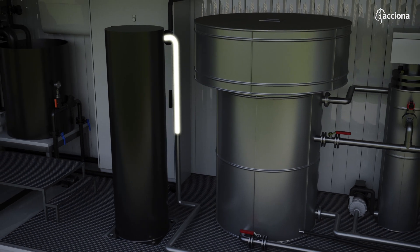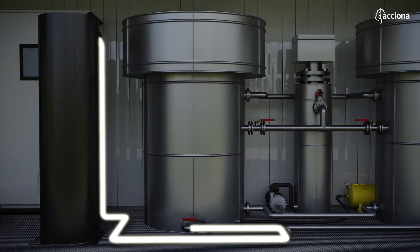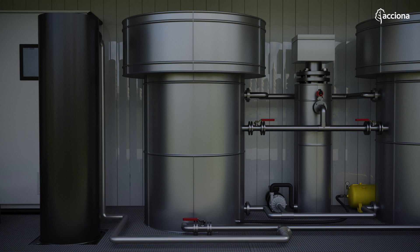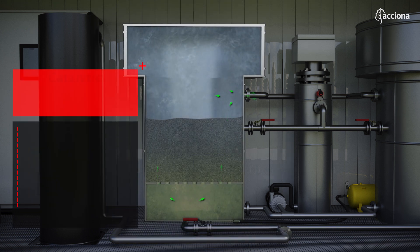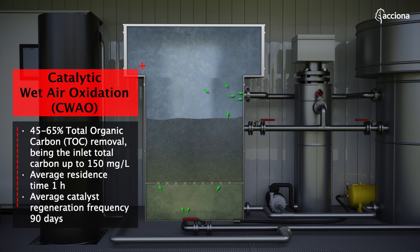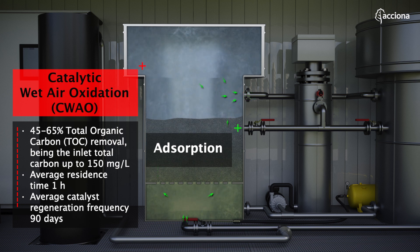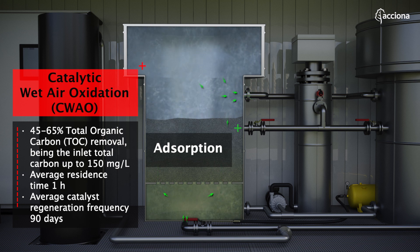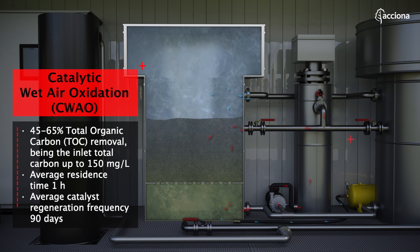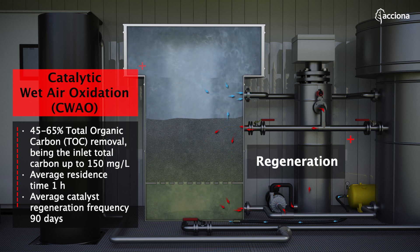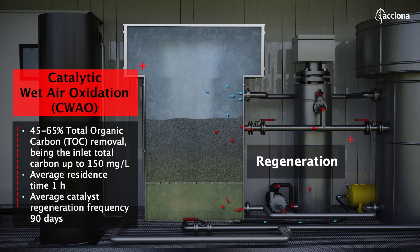Catalytic wet air oxidation is a continuous process that transforms the residual organic compounds into carbon dioxide and water without the generation of by-products. The water to be treated is introduced continuously into a reactor that contains a special absorbent that also acts as a catalyst. Once the absorbent is saturated, regeneration takes place where the absorbed organic compounds are oxidized into carbon dioxide, avoiding the generation of by-products.